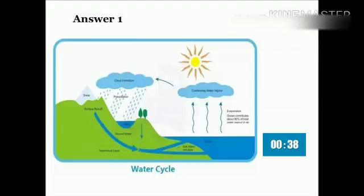All right, so this is a diagram of the water cycle. First, water is evaporated from the ocean and condenses to form clouds, and the ocean contributes about 80% of total water vapour in the air.